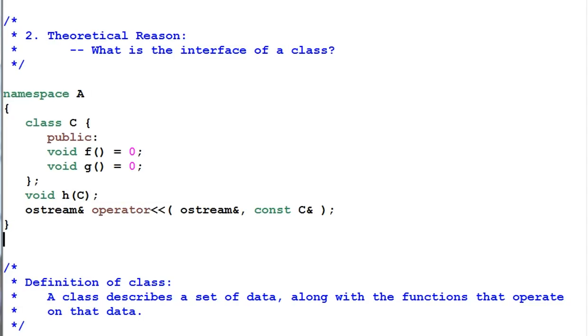Now suppose I have another function j which also operates on C but is outside the namespace of A. Will you call j function part of C's interface? Apparently not. J looks very much like a client function that operates on class C.